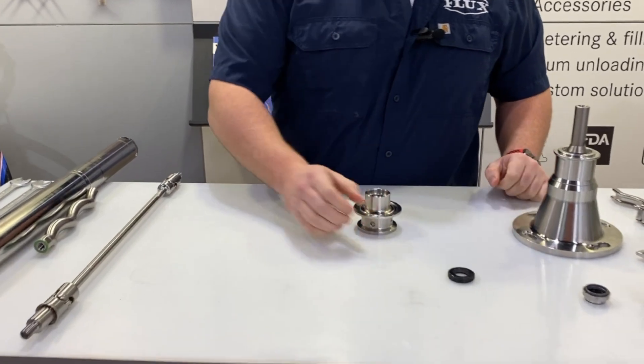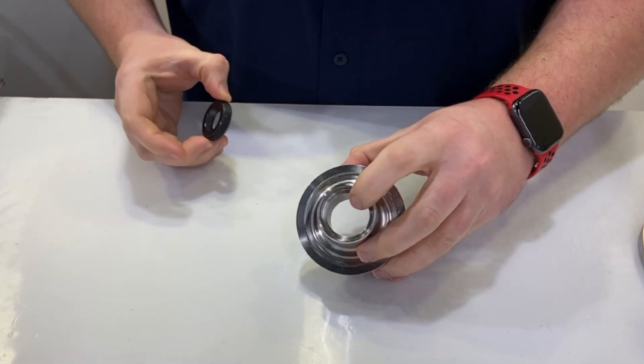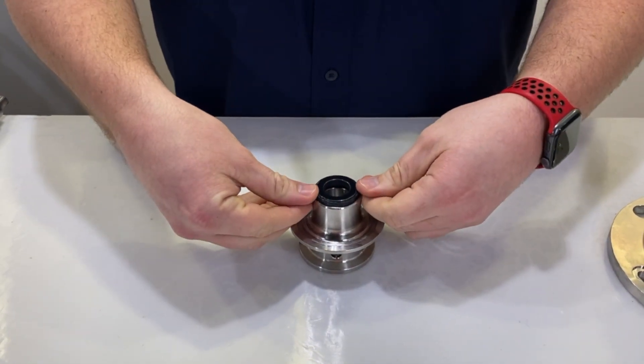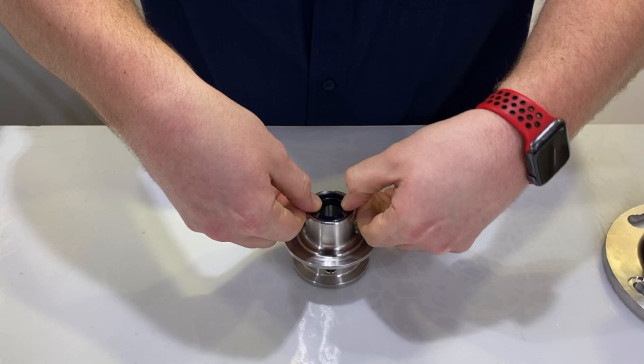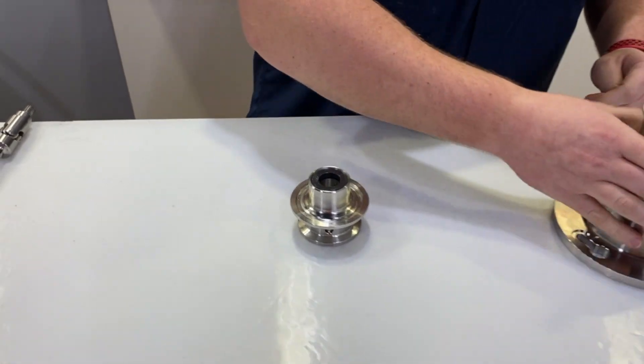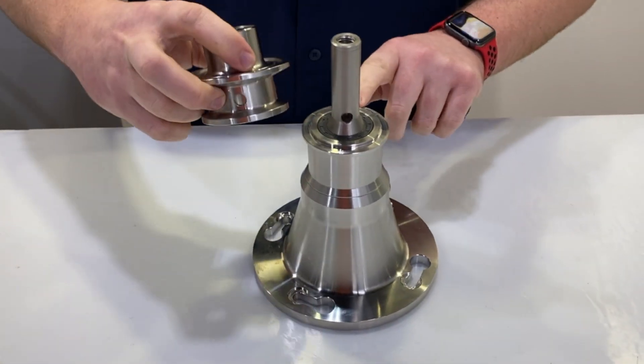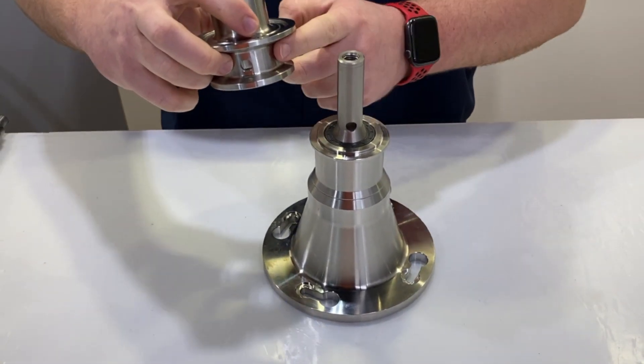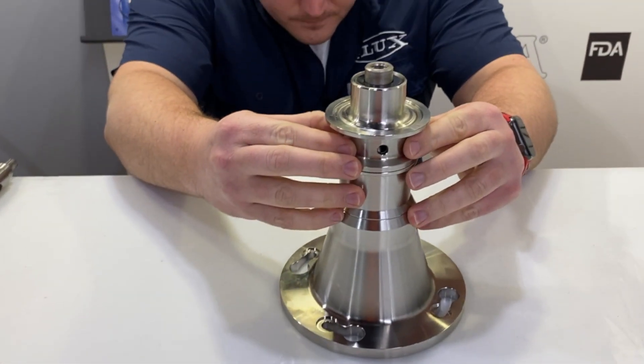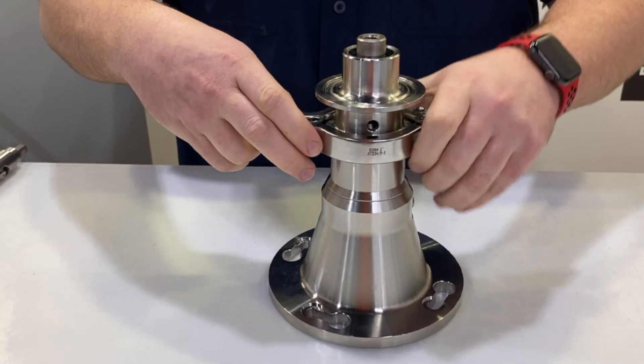We'll then reinstall our seal, starting with the stationary face. It sits down on this shoulder here in the motor connection piece. Press the stationary face firmly down. When doing so, just be sure that your hands are clean as you don't want to get any particulates on the seal face which would cause damage. Then we will install the motor connection piece back onto the bearing flange, aligning the two sight windows, and secure that in place with the smaller of the two tri-clamps.